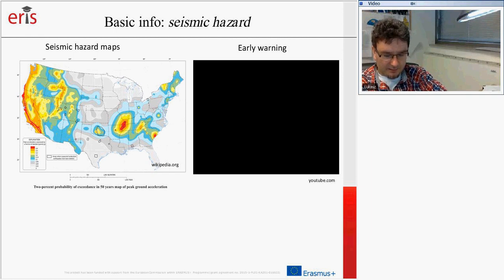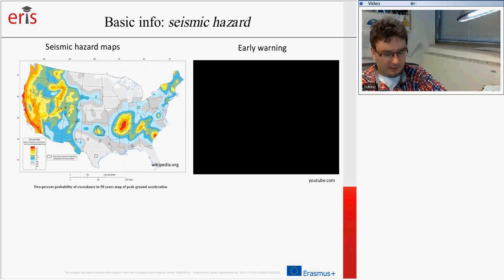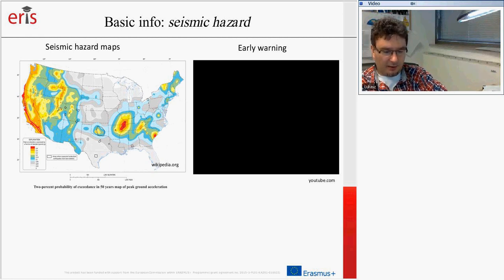Now let's think about seismic hazards, seismic risk, and forecasting. As a seismologist, we can provide information about seismic hazard. Seismic hazard is the probability that, in a given location, the ground shaking exceeds some level. This information can later be used by engineers to build structures that are less influenced by ground shaking.